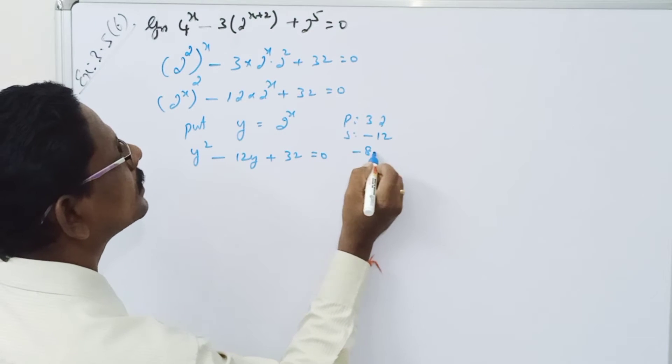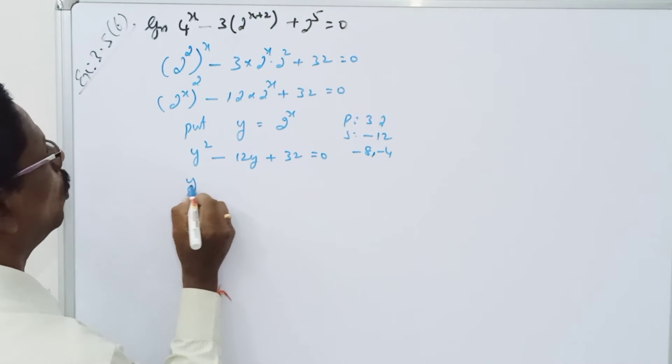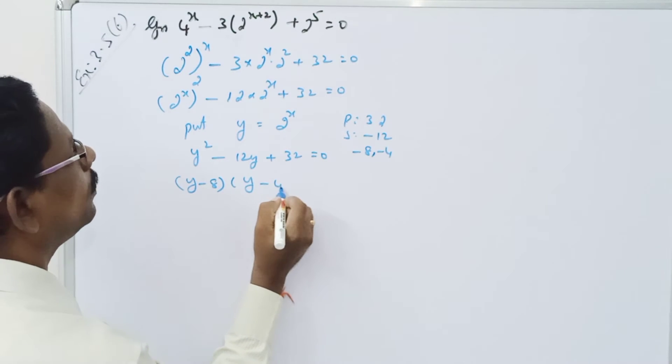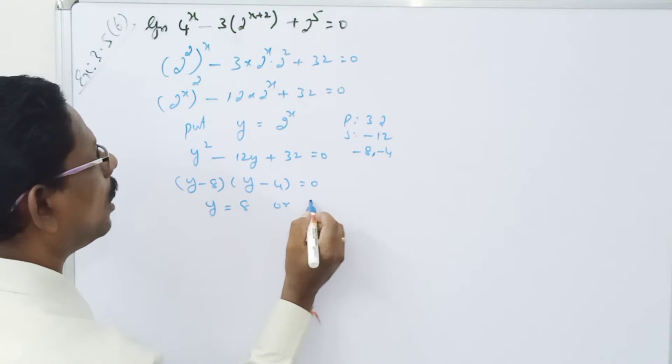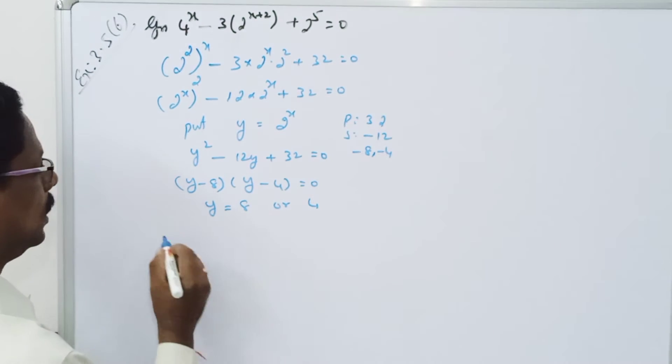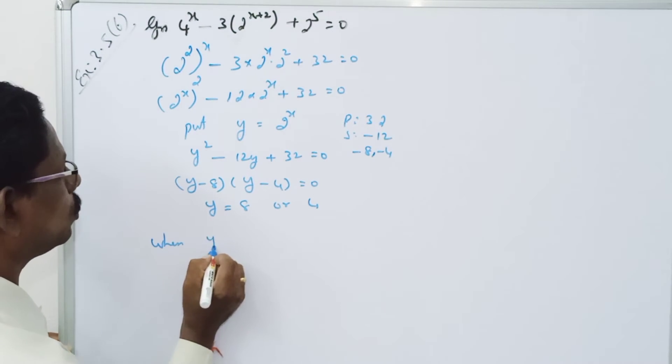So minus 8 comma minus 4. y minus 8 times y minus 4 equals 0. y equals 8 or y equals 4. When y equals 8,